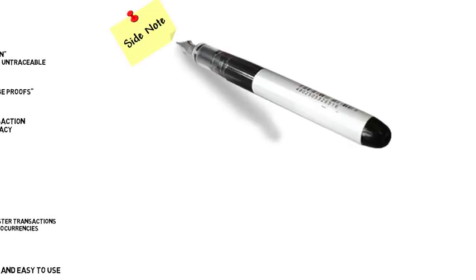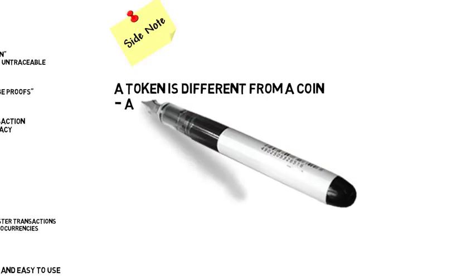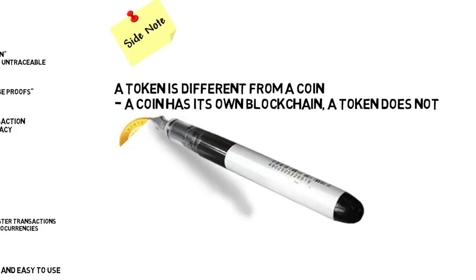A side note: these cryptocurrencies — a token is actually different from a coin. A coin has its own blockchain, like Bitcoin or Ethereum, whereas a token basically uses the blockchain of one of the coins, so it's not its own. Many of these tokens we call ERC-20 tokens, used for ICOs. These tokens actually use Ethereum's blockchain and don't have their own blockchain.